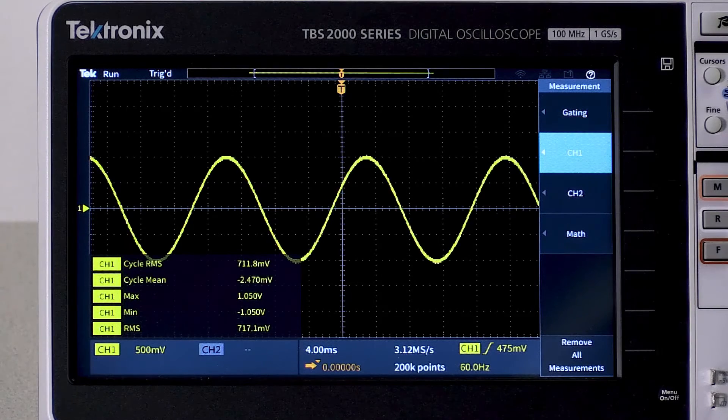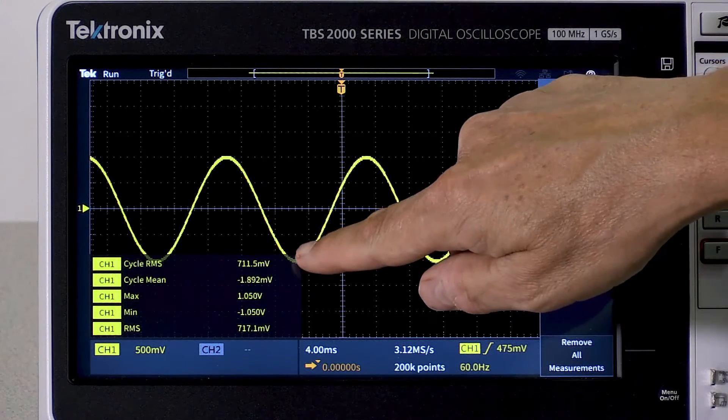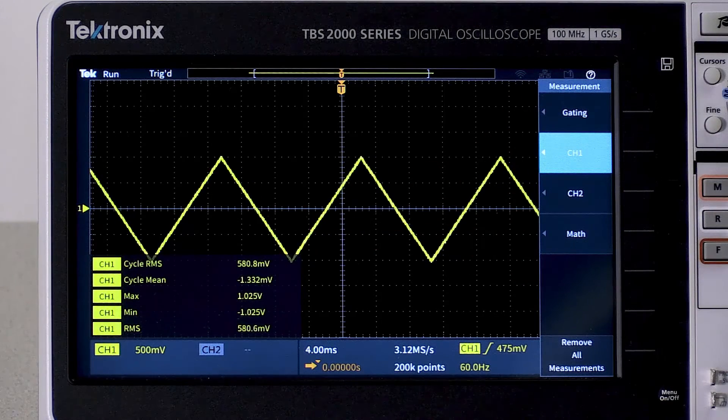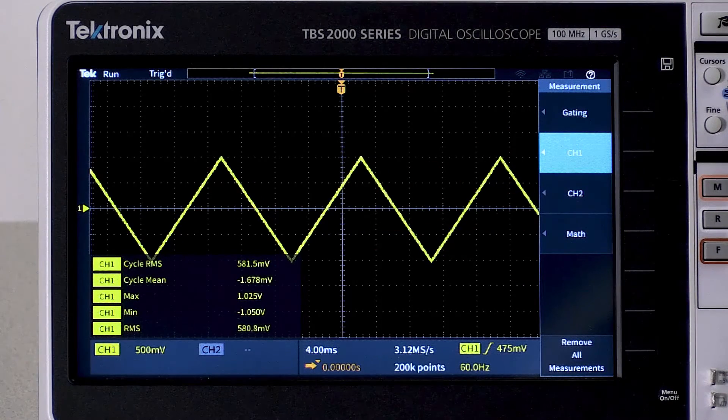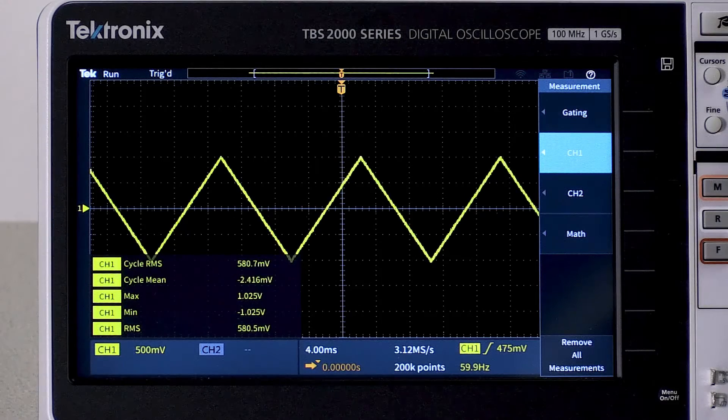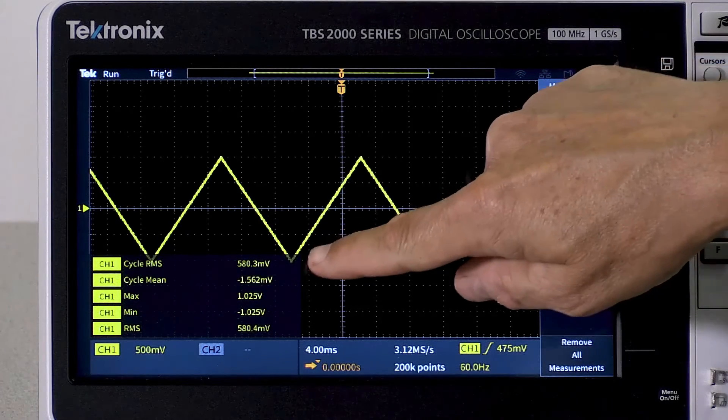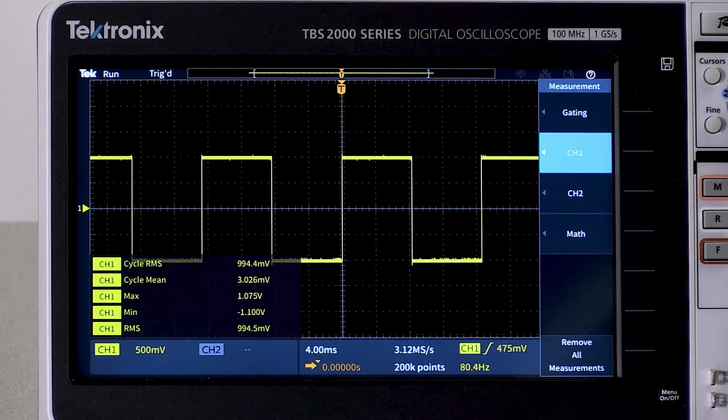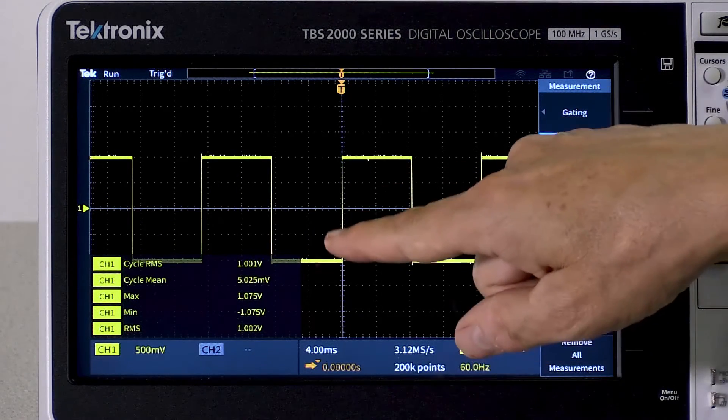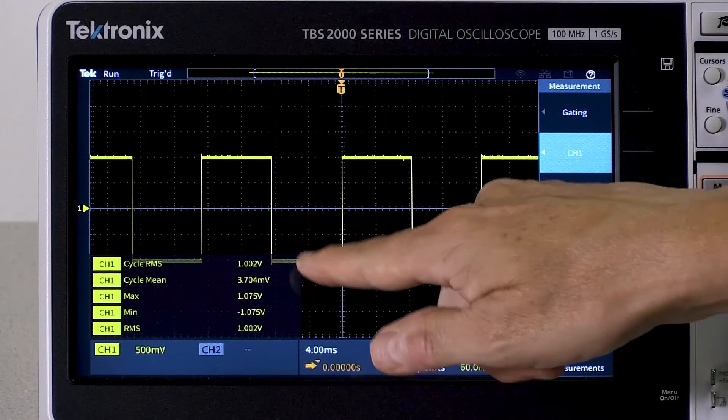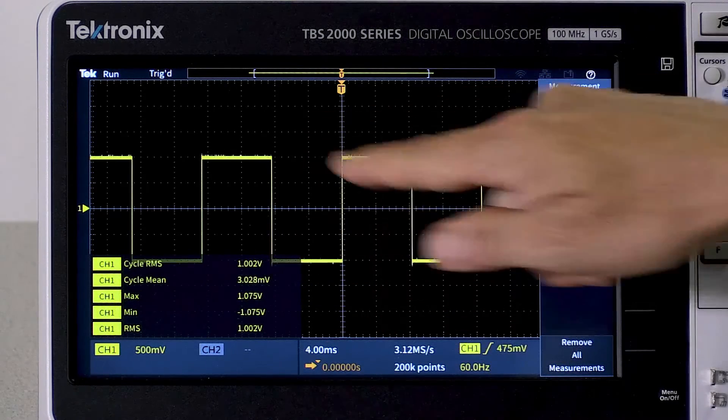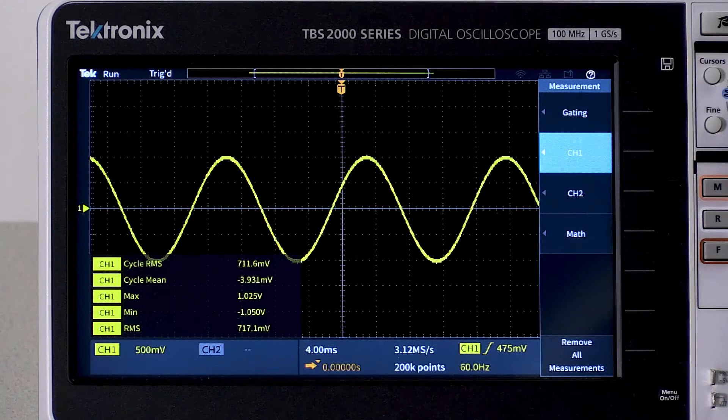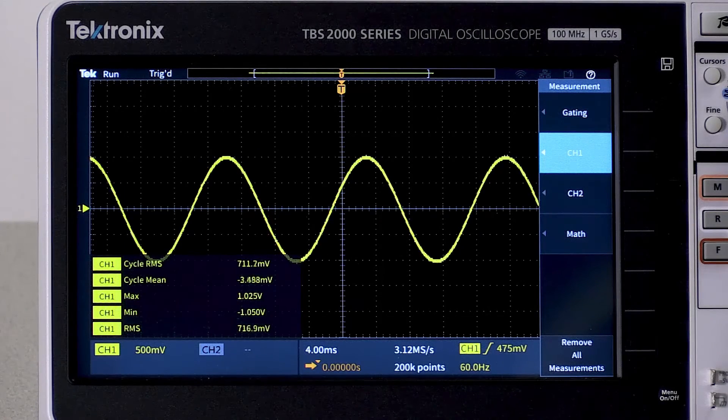And for a pure sine wave with no offset, the RMS value is always going to be around 70% or 71% of the peak. For a triangle wave, the RMS value will be around 58% of the peak. And if we look at a square wave, a square wave cycle RMS or RMS will be about the same as the peak voltage.